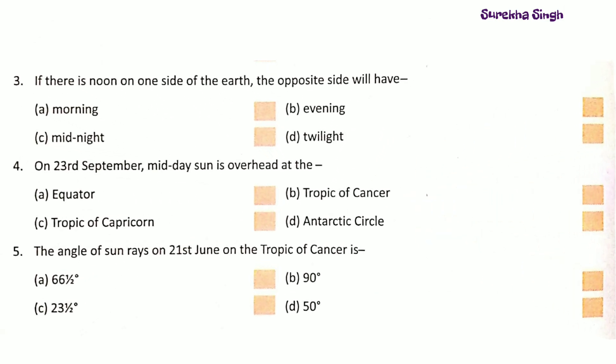Question 3: If there is noon on one side of the earth, the opposite side will have Option C: Midnight.